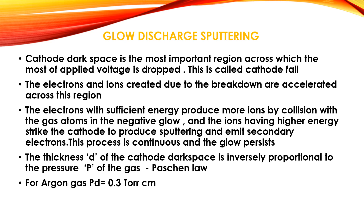The cathode dark space is the most important region, across which most of the applied voltage drops — this is called the cathode fall. The electrons and ions created due to the breakdown are accelerated across this region. The electrons with sufficient energy produce more ions by collision with the gas atoms in the negative glow, and the ions with high energy strike the cathode to produce sputtering and emit secondary electrons. This process is continuous and the glow proceeds. The thickness d of the cathode dark space is inversely proportional to the pressure of the gas — this is known as Paschen's law. For argon gas, P × d is approximately 0.3 torr·cm.